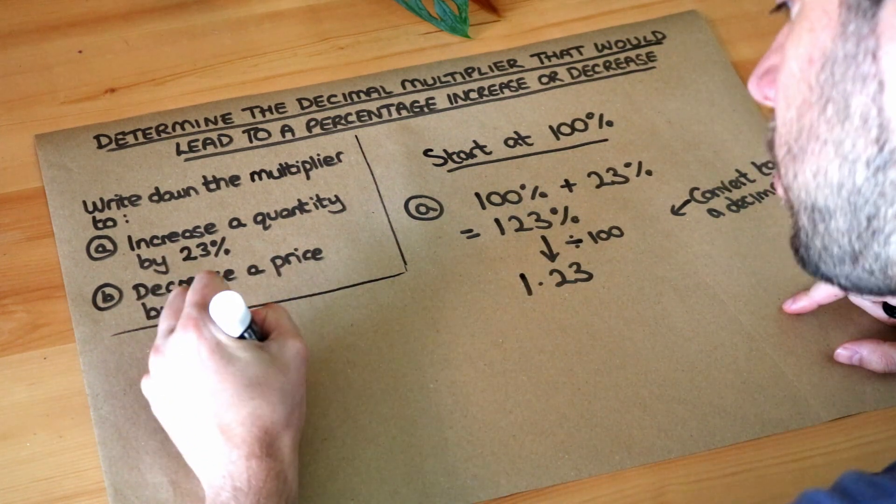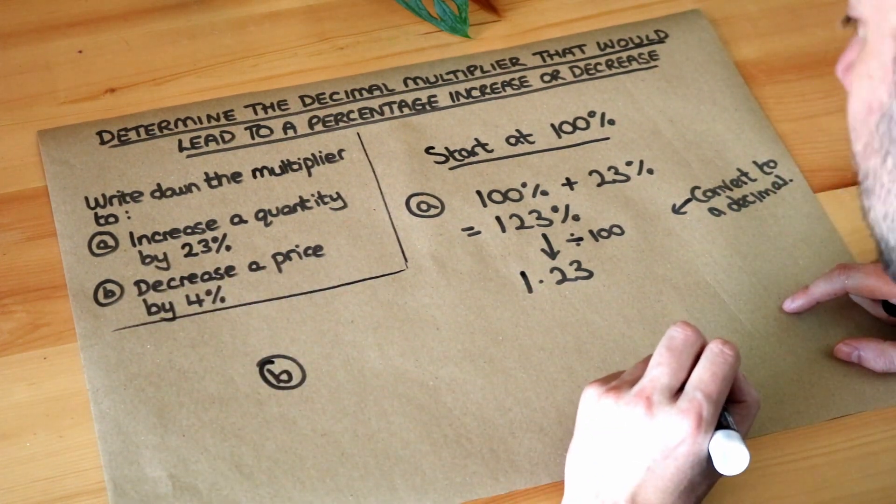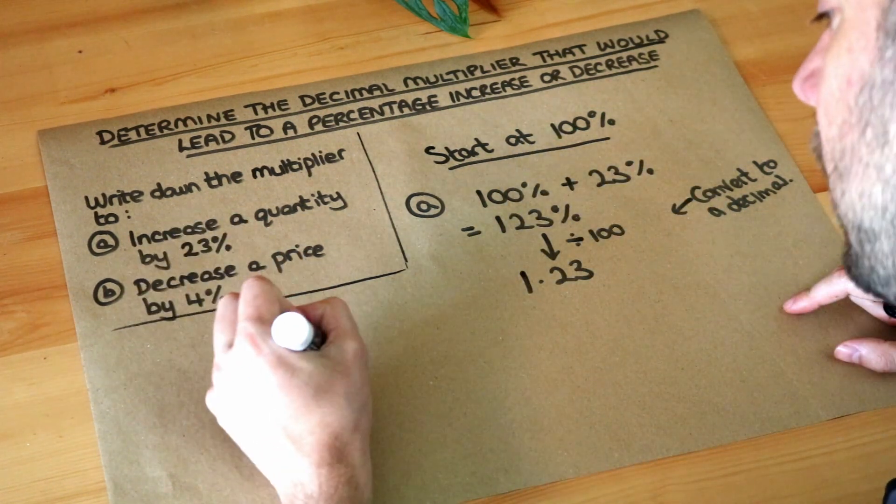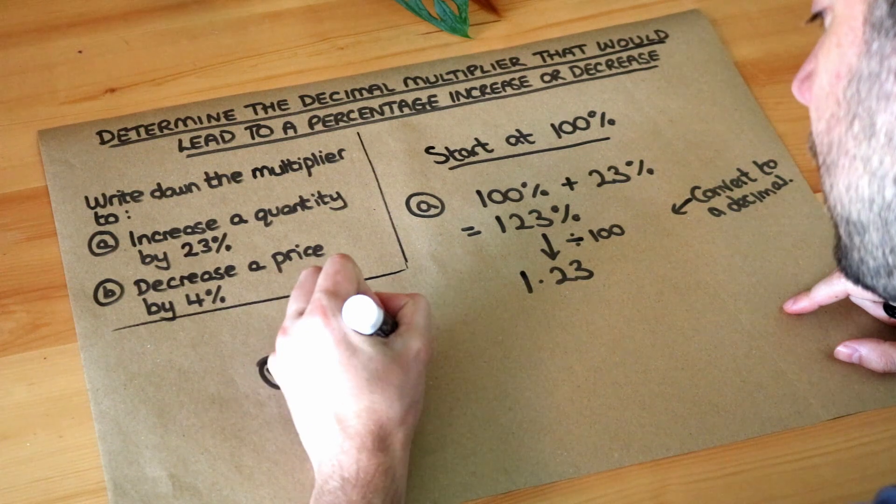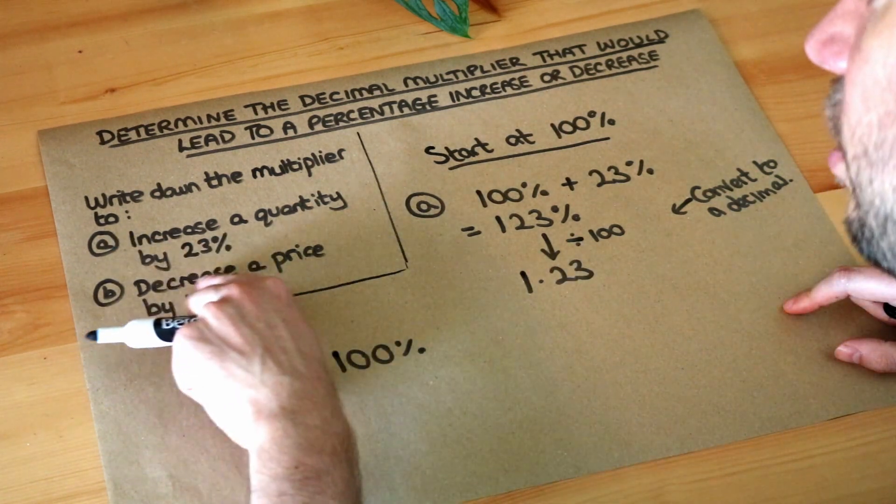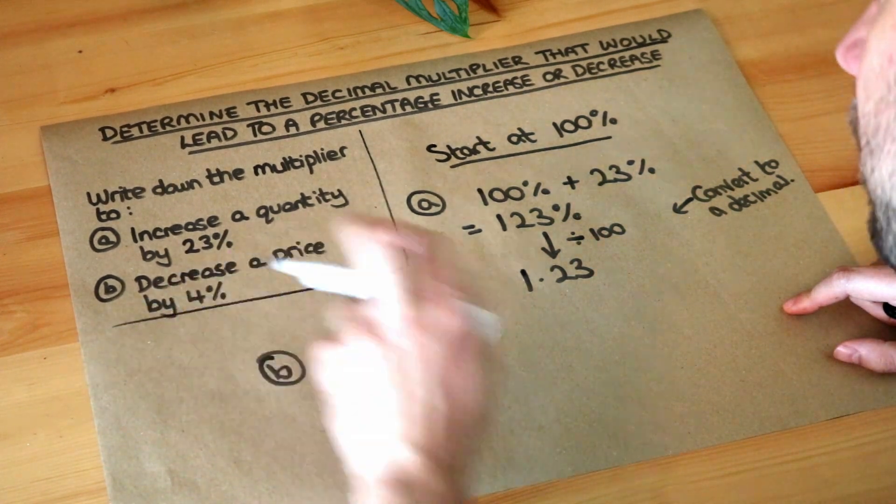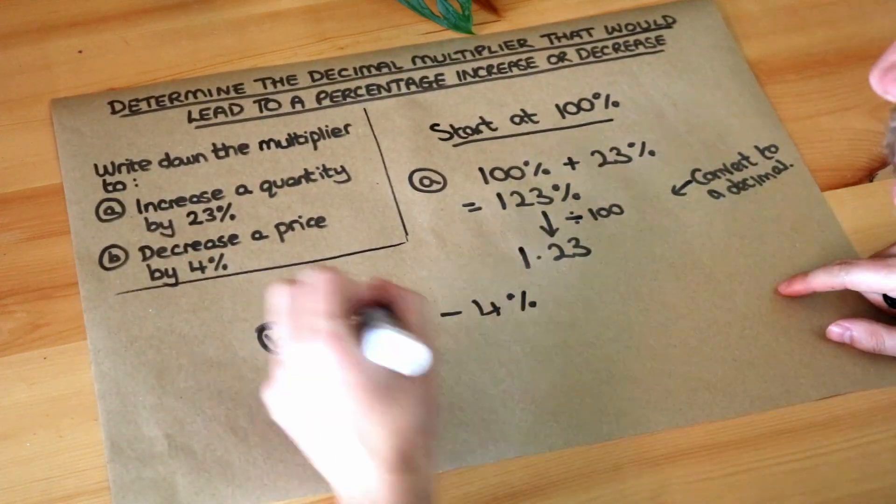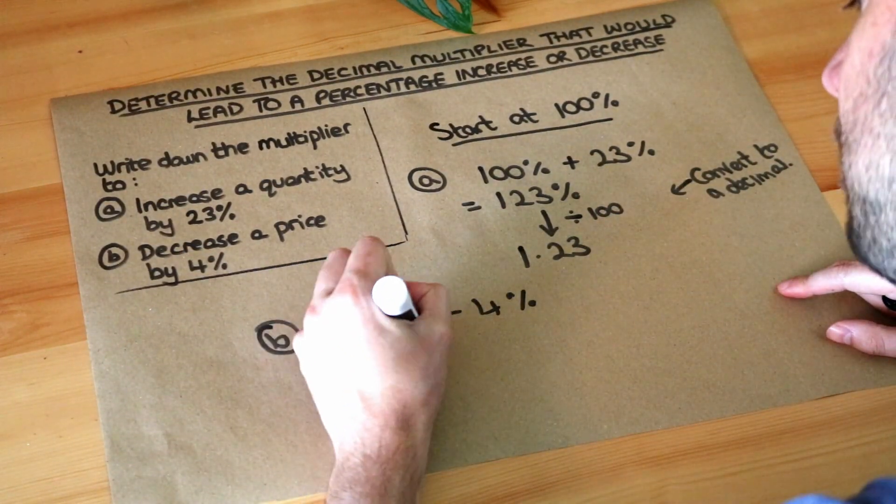What about the second one? We want to decrease a price by 4%. Now as before, we always start at 100%. The price of the item starts 100%, so all of it. And then we're decreasing, so we're reducing it, going down by 4%. So minus 4%. Now what's 100 minus 4? Well it's just 96. So we're at 96%.